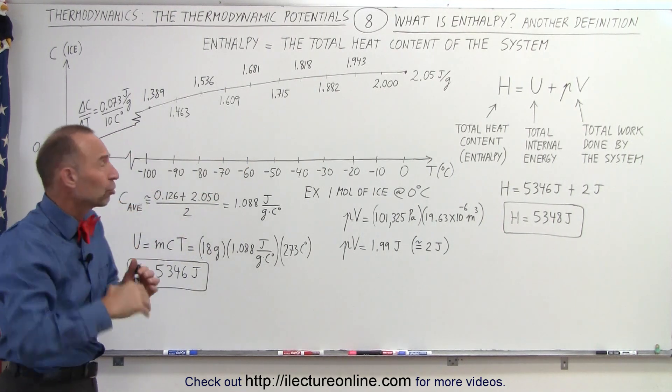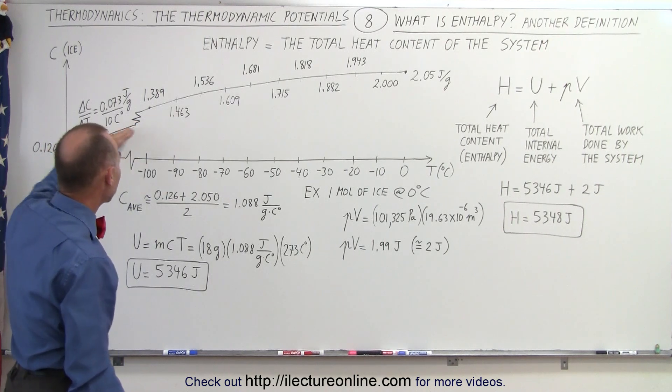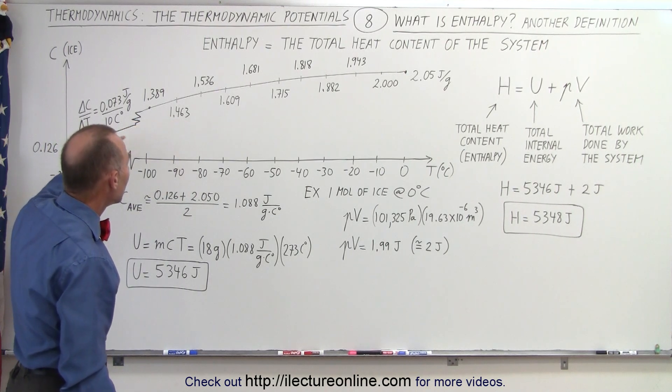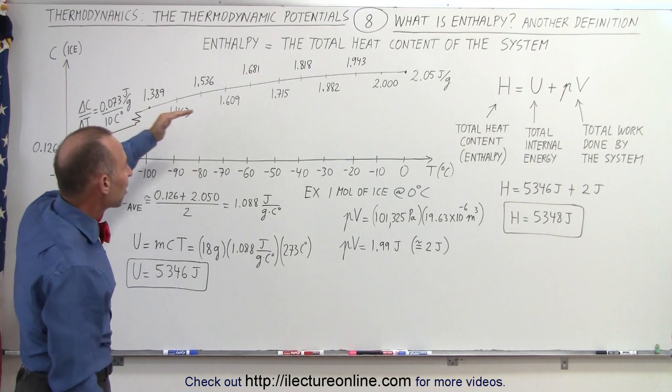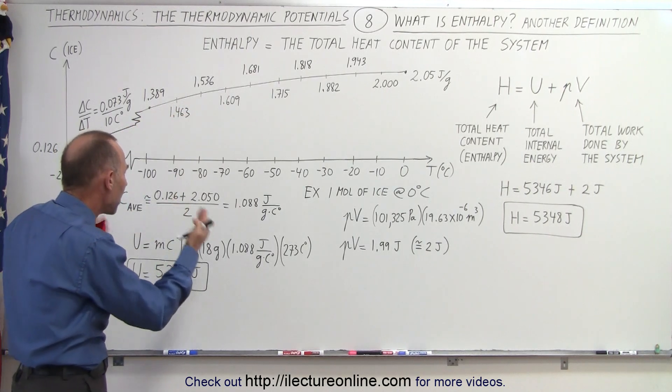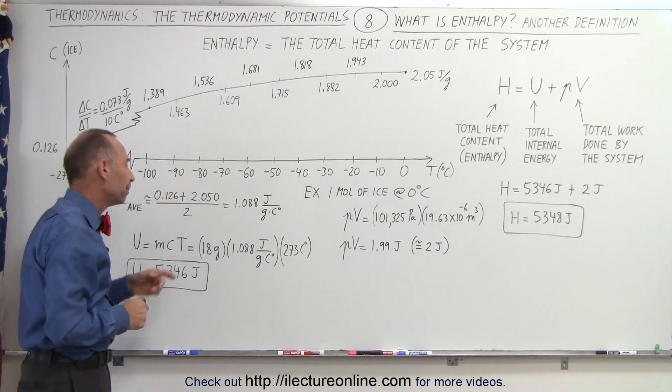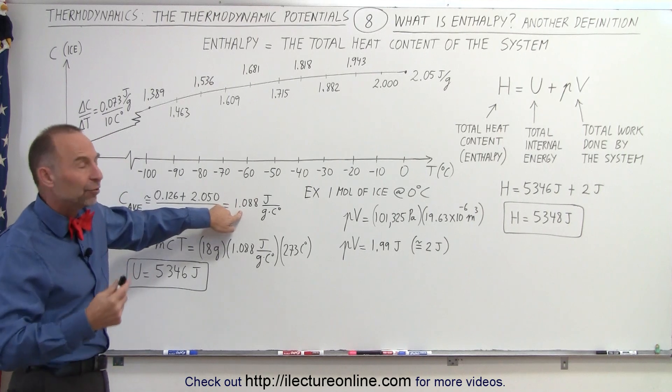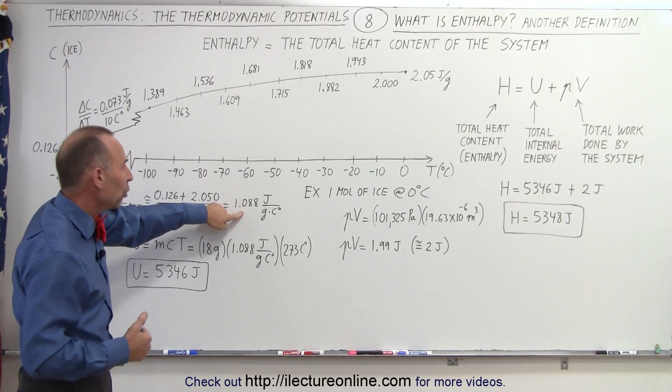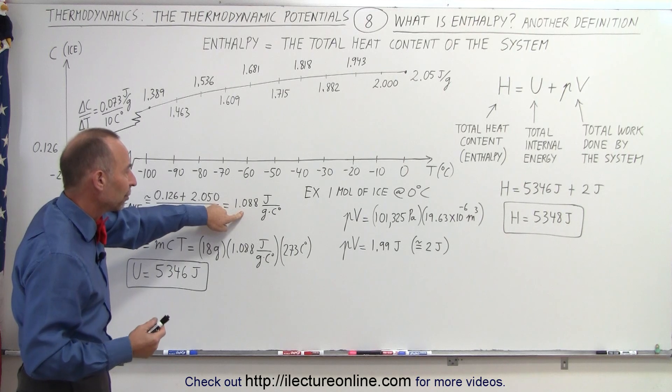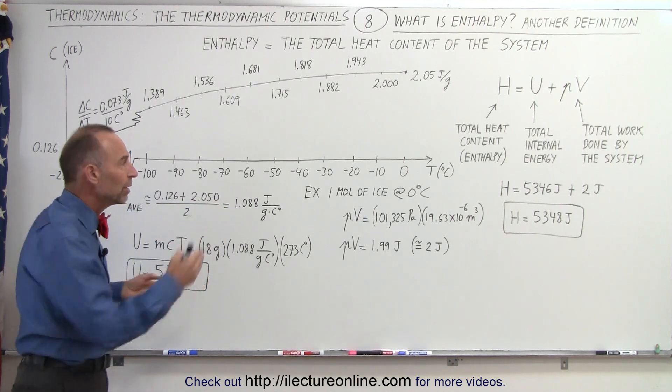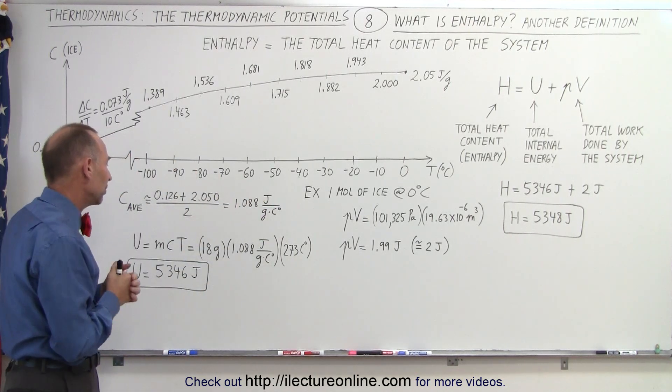I know it's not a perfect linear slope. It becomes a linear slope here at about minus 80 or minus 90, but above that it's not that far away from the linear slope. So it's approximately the average of the two values. So let's say it's 1.08 joules per gram per centigrade degree on average between zero and minus 273 centigrade.